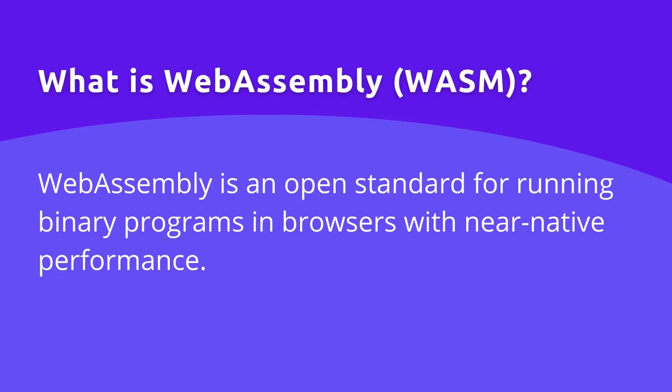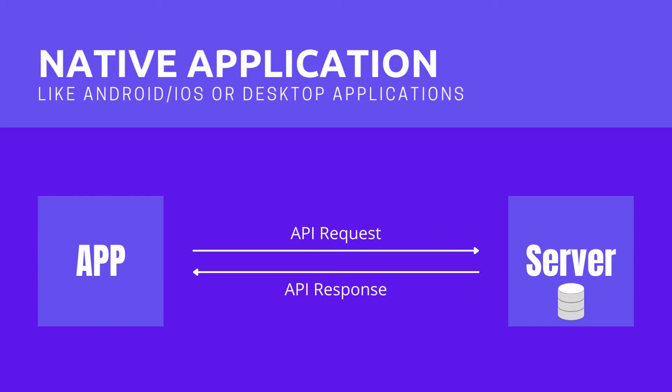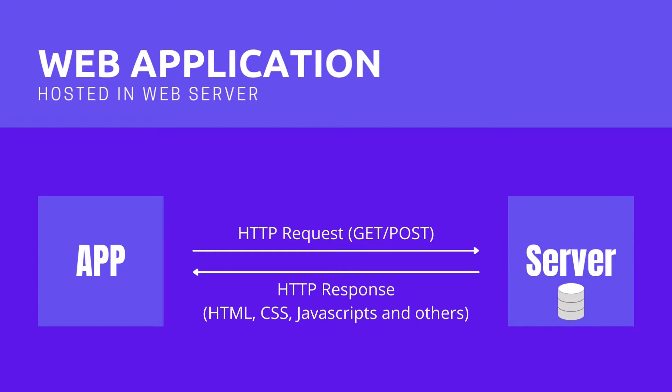To explain WebAssembly, let's take an example of Android or iOS apps, or even desktop applications like Windows or Linux applications. For using those applications we must install them first, then the whole application runs locally on the device. We can use APIs for fetching or writing data to a server database, but apart from those API requests, everything works locally on the device.